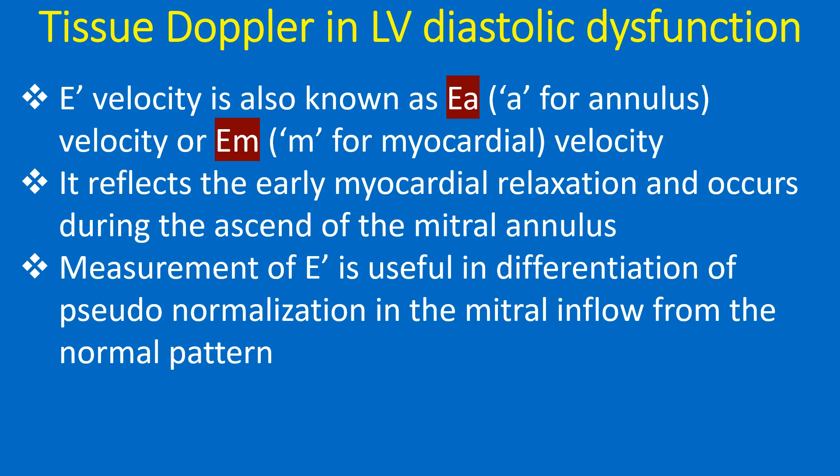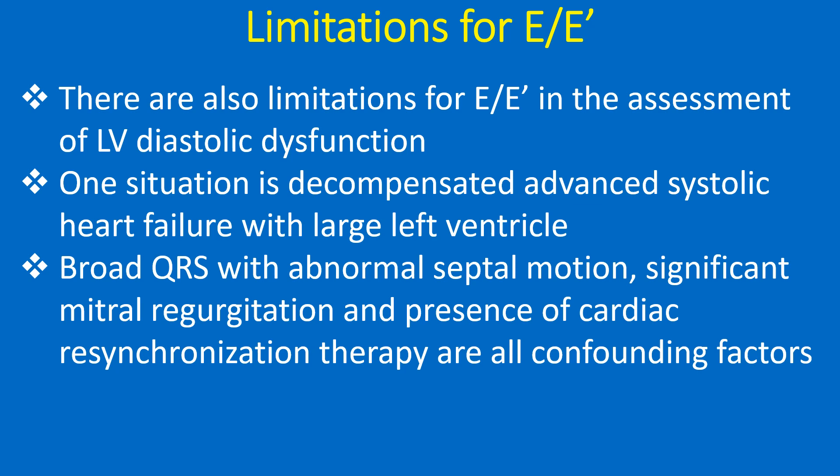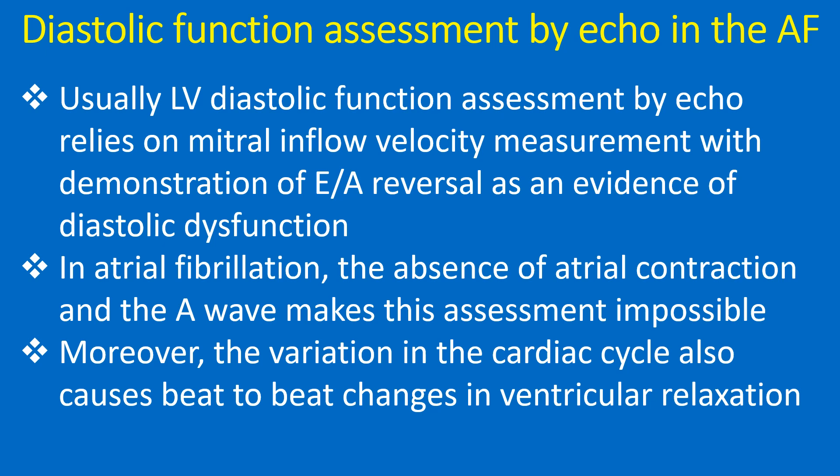Measurement of E-prime is useful in differentiating pseudo-normalization in the mitral inflow from a normal pattern. However, there are limitations for E-by-E prime in the assessment of LV diastolic dysfunction. These include decompensated advanced systolic heart failure with a large left ventricle, broad QRS with abnormal septal motion, significant mitral regurgitation, and the presence of cardiac resynchronization therapy — all of which are confounding factors. Normally, LV diastolic dysfunction assessment by ECHO relies on mitral inflow velocity measurement with demonstration of E-by-A reversal as evidence of diastolic dysfunction.